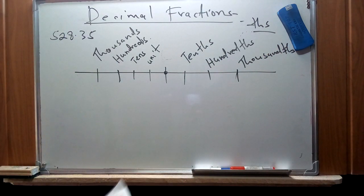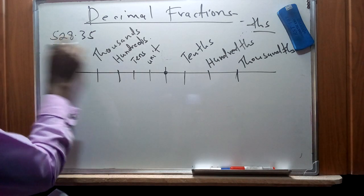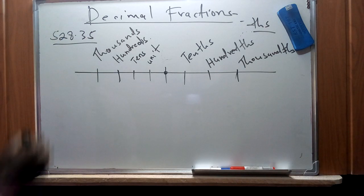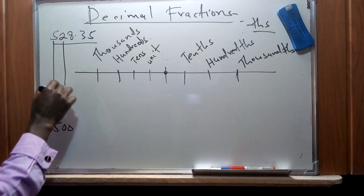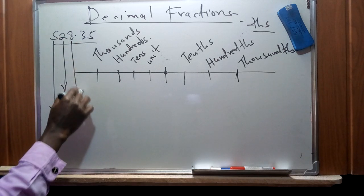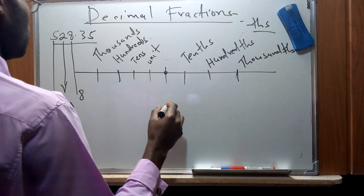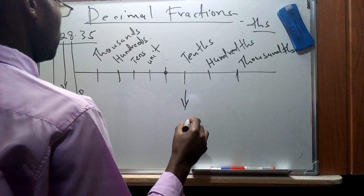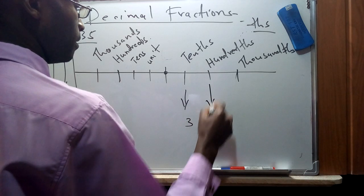In the position diagram, for the number 528.35: the digit 5 represents hundreds, 2 represents tens, 8 represents units, the digit 3 after the decimal point falls under tenths, and 5 falls under hundredths. If there were a seventh digit, it would fall under the next decimal place in that setup.